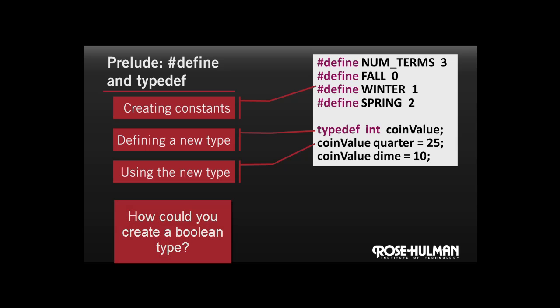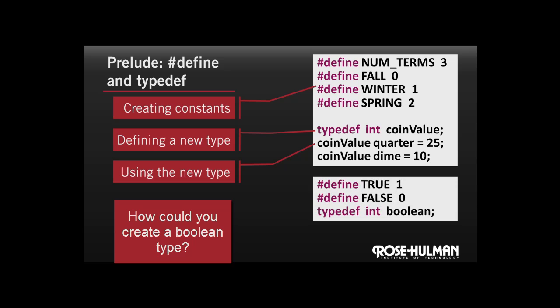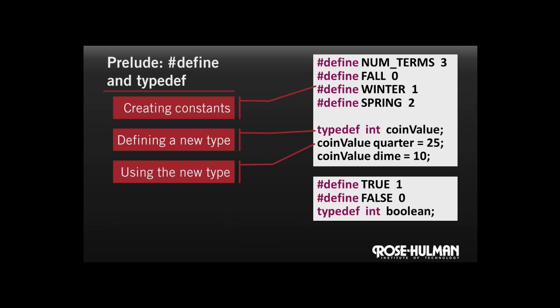With this in mind, think for a minute: how could we make our own Boolean type? We could define true to be 1, false to be 0, as we know, and then we could just use a typedef to say that Boolean is just another name for an int.